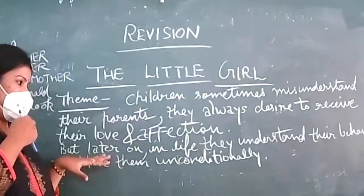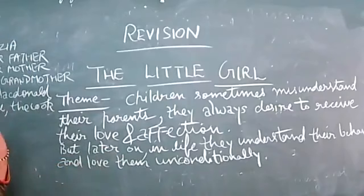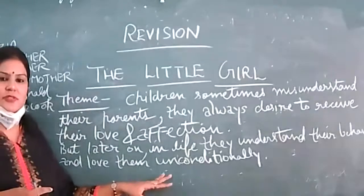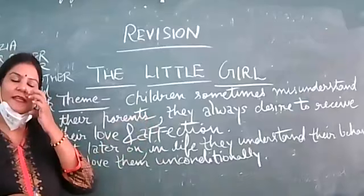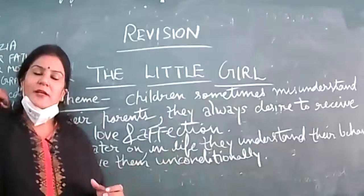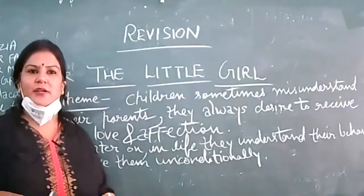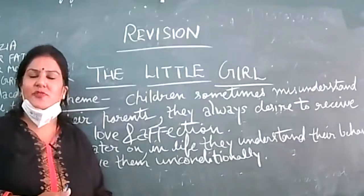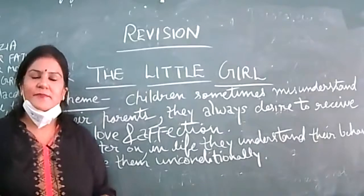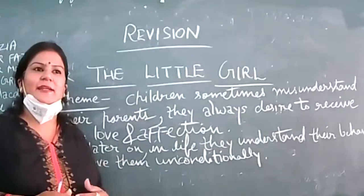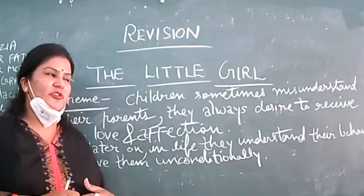The theme is that many children most of the times misunderstand their parents and they always desire to be loved and get affection from them. But later on when they grow up in life, a point comes when they do understand their behavior and love for them also. Kezia is very scared of her father. Her father is a giant figure who keeps on giving instructions to her, keeps on scolding her, and he never sits with her and talks nicely.